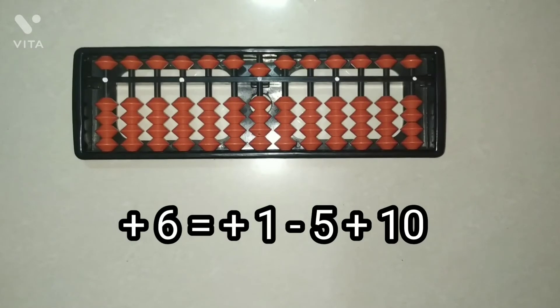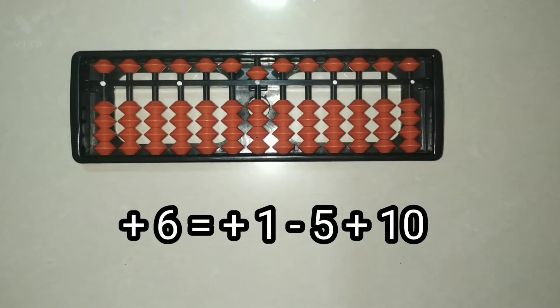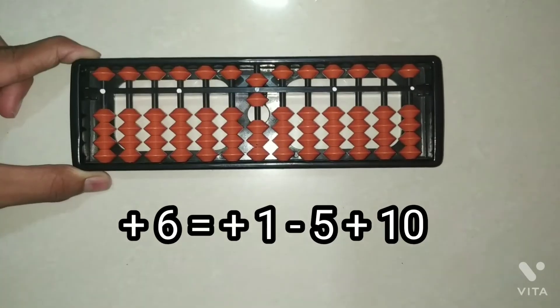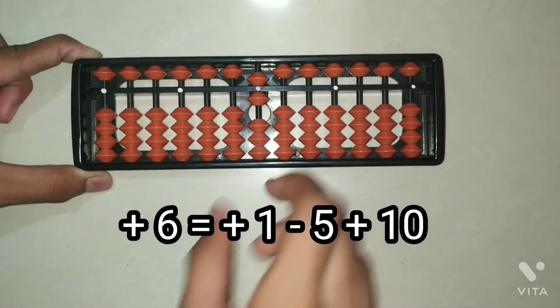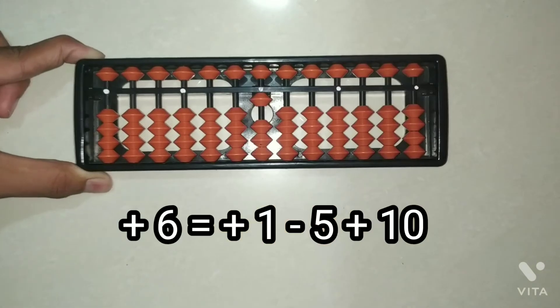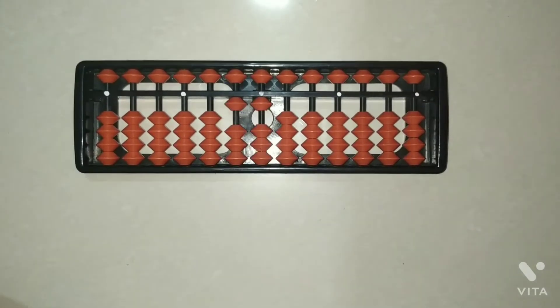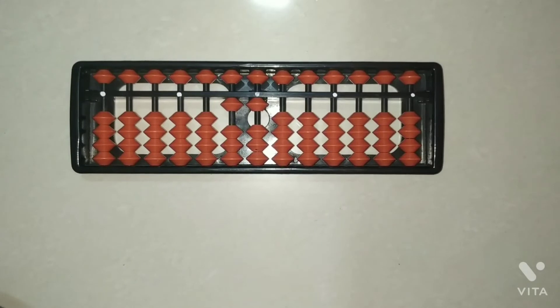To add 6 in 5, first we add 1 and minus 5 and add 10. That's called a mixed complement.